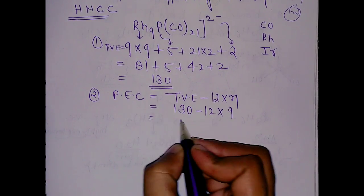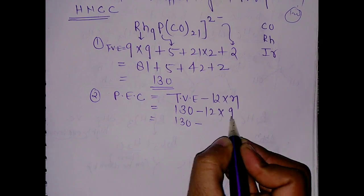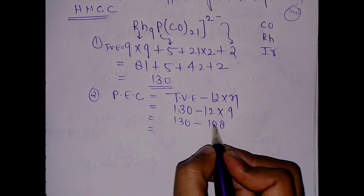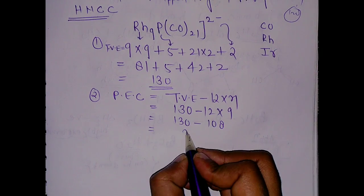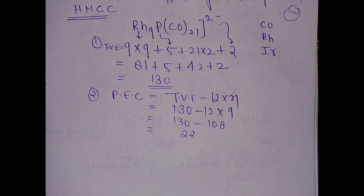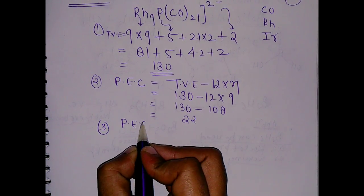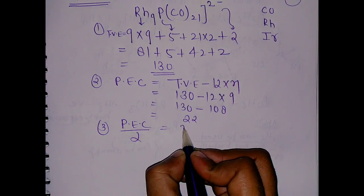Total valence electron is 130 minus 12 times 9 metal atoms, so 130 minus 108. We will get 22.